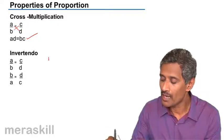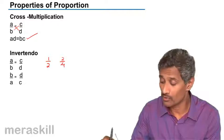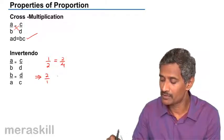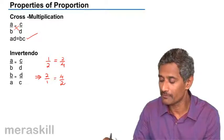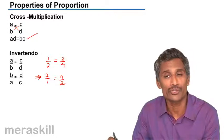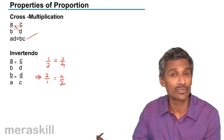For example, we know 1/2 equals 2/4. Then 2/1 is also equal to 4/2. Obviously, 2 is not equal to 1/2 and 4/2 is not 2/4, but these two are equal to each other. The new ratio obtained by inverting them, they are also equal. Hence, this is invertendo.